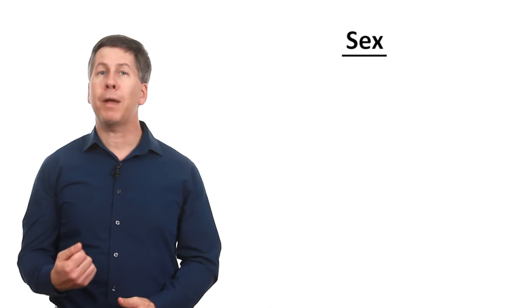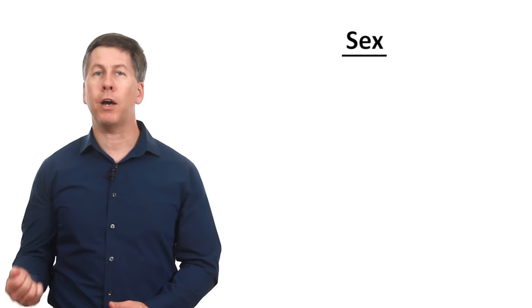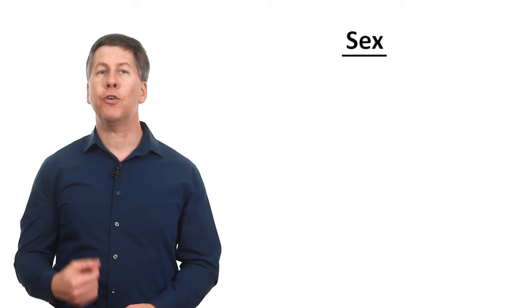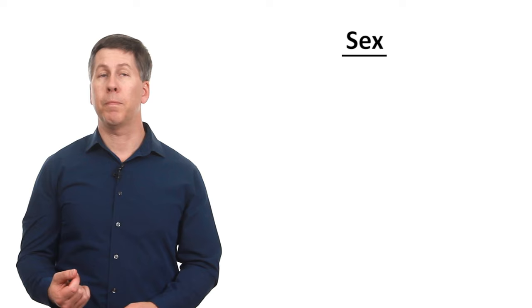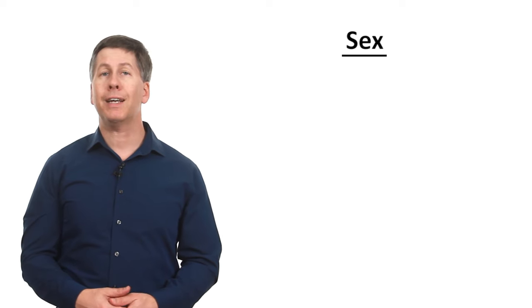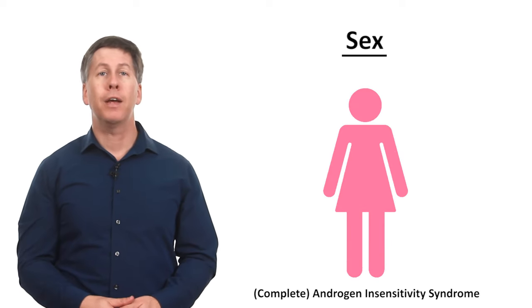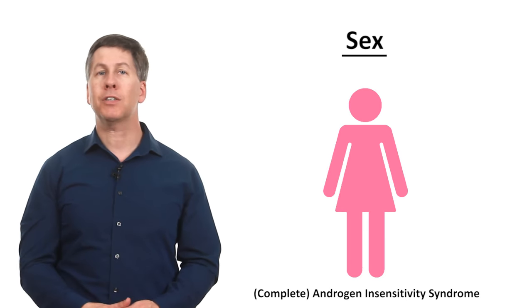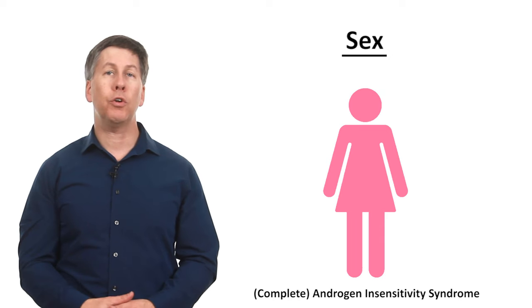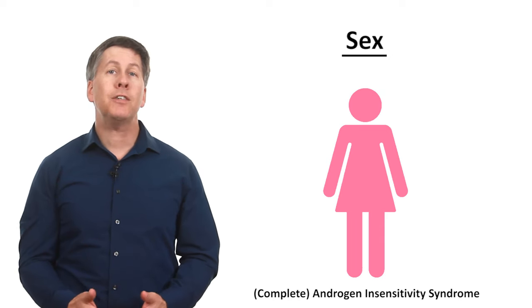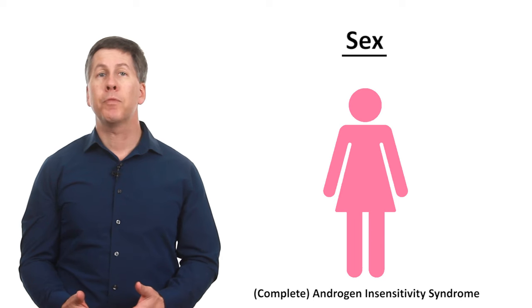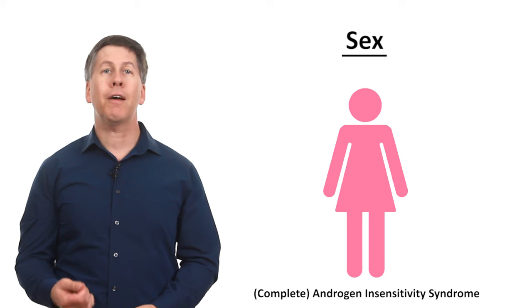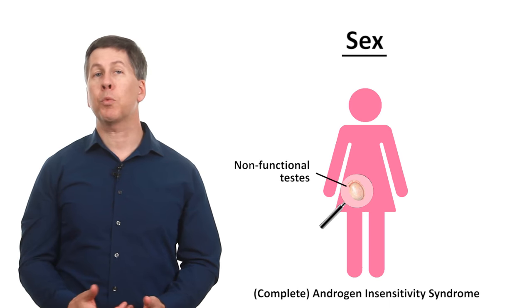Sometimes, an infant may have external genitalia that appears clearly male or clearly female, but with internal reproductive organs that don't match with what might be typically expected. For example, in a condition called androgen insensitivity syndrome, a mutation in the androgen receptor renders a fetus incapable of responding to testosterone while developing in utero. As a consequence, the fetus develops a vagina and clitoris, but they have no uterus or fallopian tubes, and instead of ovaries, they have non-functioning testes that reside somewhere within the pelvis.